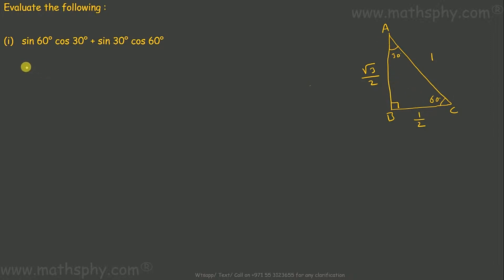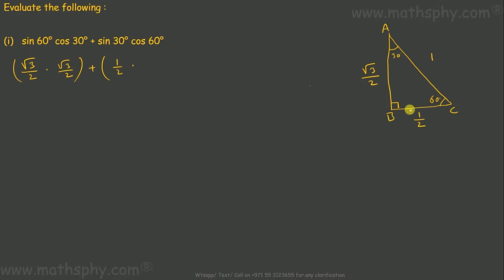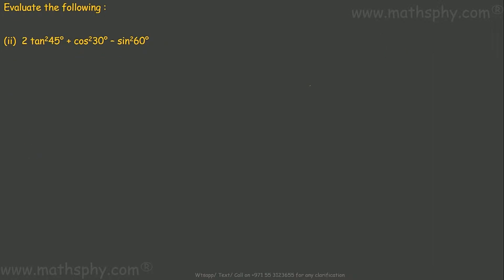Sine 60 is opposite over hypotenuse, which is root 3 over 2. Cos 30 is adjacent over hypotenuse, also root 3 over 2. Sine 30 is opposite over hypotenuse, which is 1 over 2. Cos 60 is adjacent over hypotenuse, which is 1 over 2. So this gives me 3 over 4 plus 1 over 4, which equals 1. This equation has a value of 1.